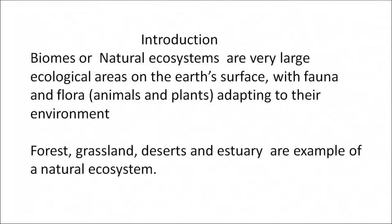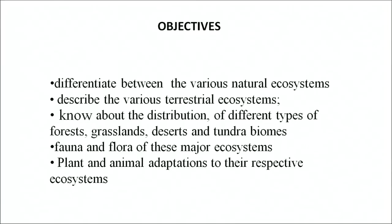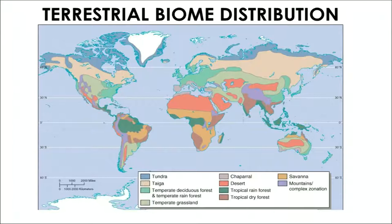The objectives of today's program are that after learning this, you can differentiate between the various natural ecosystems, describe the various terrestrial ecosystems, know about the distribution of different types of forests, grasslands and tundra biomes, fauna and flora of these systems, and plants and animals' adaptation to their respective ecosystems. As you have learnt previously, there are two main types of ecosystems: terrestrial and aquatic.